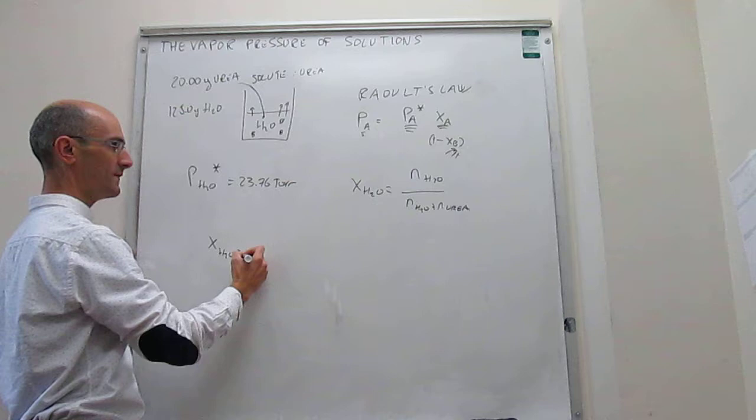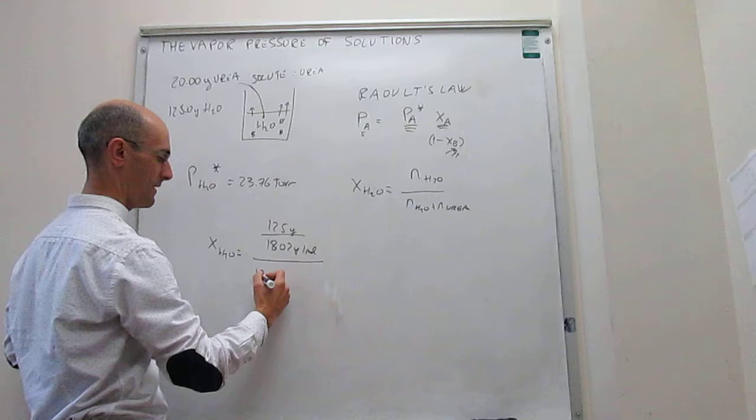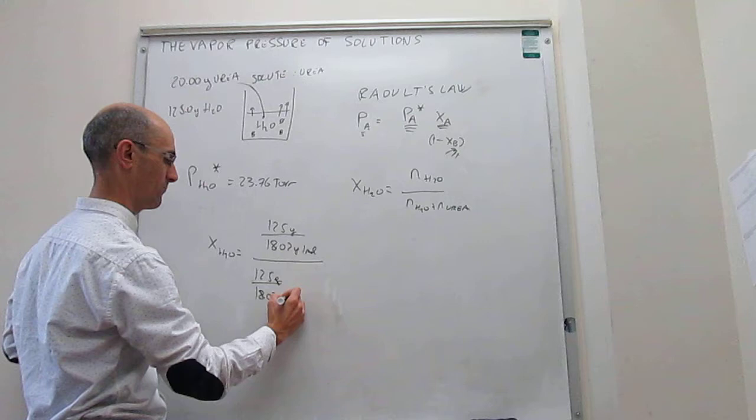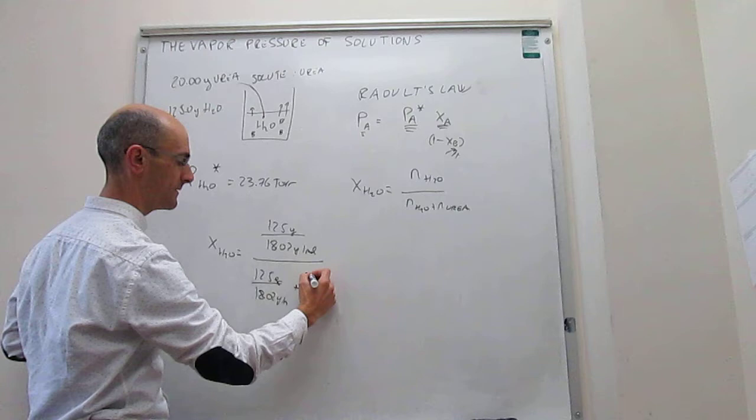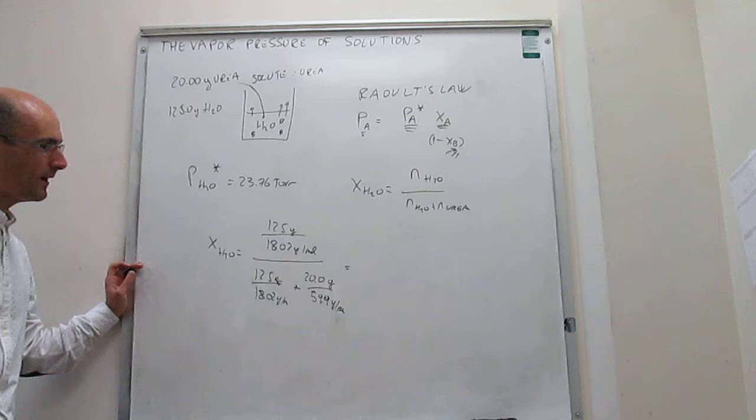That would be water and urea. And then, applying in the numbers, this would be 125 grams of water over the molar mass, which is 18.02 grams per mole. That is the number of moles of water. Here we have to write the number of moles of urea. We have 20 grams of urea, and the molar mass of urea is 59.9 grams per mole. So this gives you a mole fraction of 0.954.